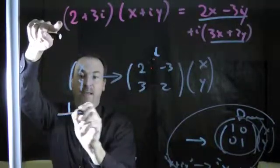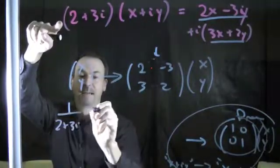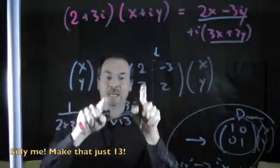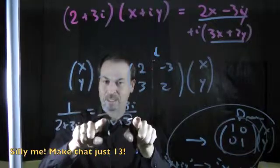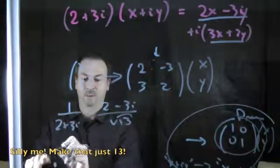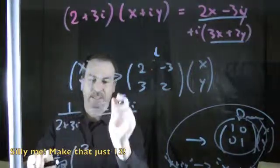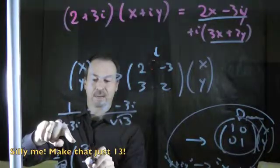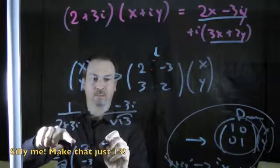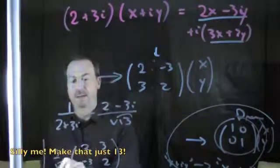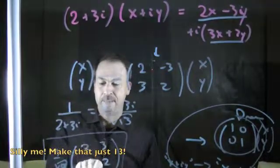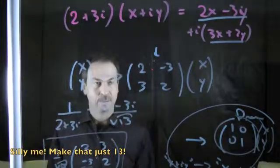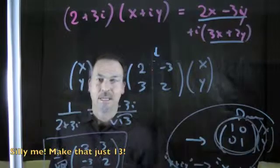For complex numbers, I know the transformation that undoes that matrix — it's multiplication by the reciprocal of 2 plus 3i, which is 2 minus 3i over root 13. I have to find the matrix that goes with this complex transformation. I'll put one over root 13 in front. I know 2 and negative 3, and it's going to be 3 and 2. So in some sense that matrix represents the undoing of the original matrix. And if I multiply those together, I actually do get the identity matrix.